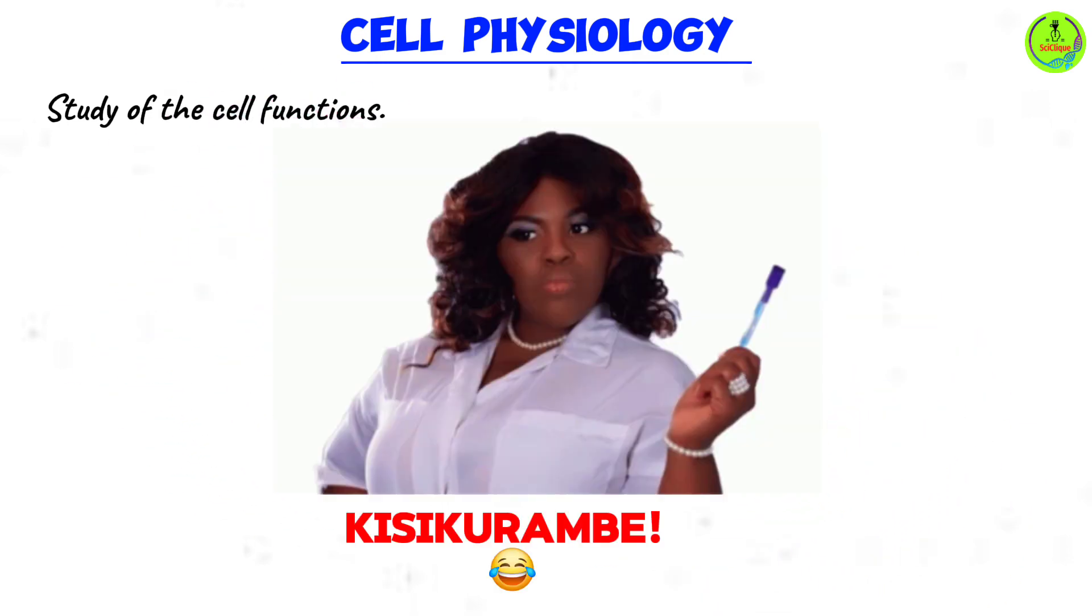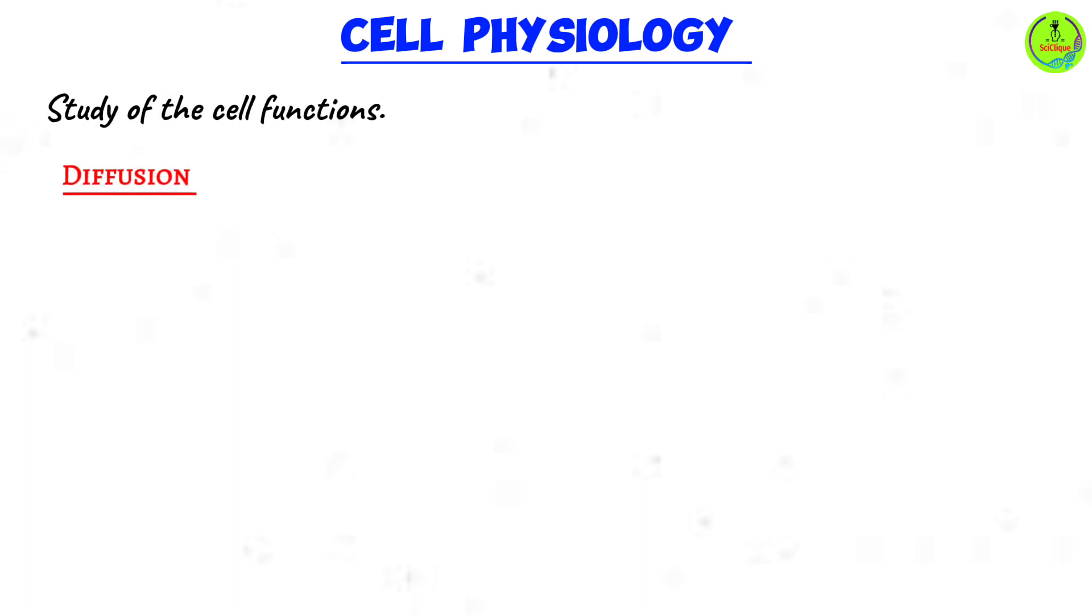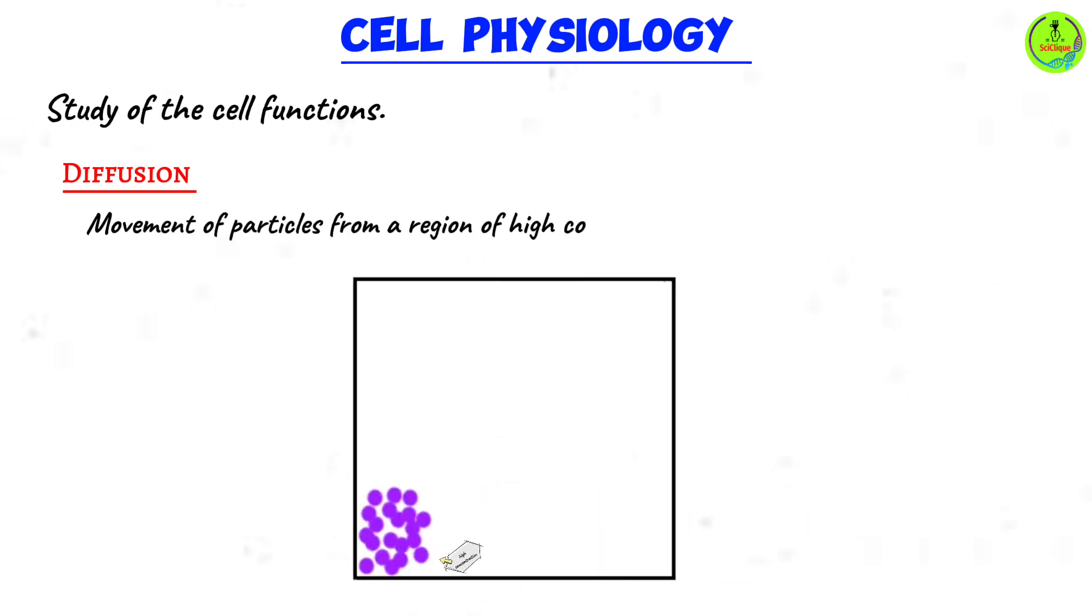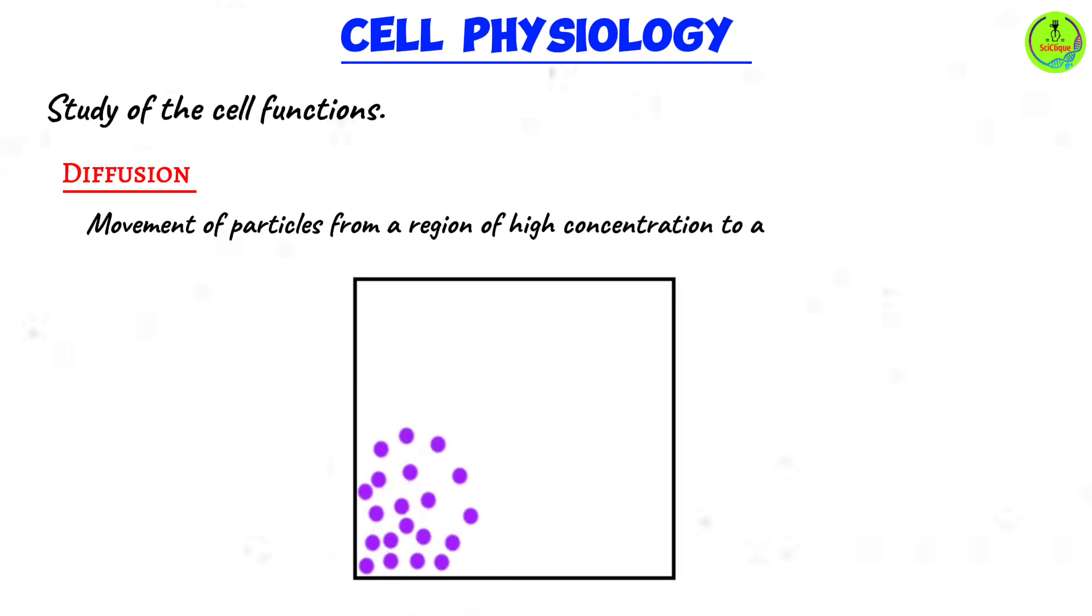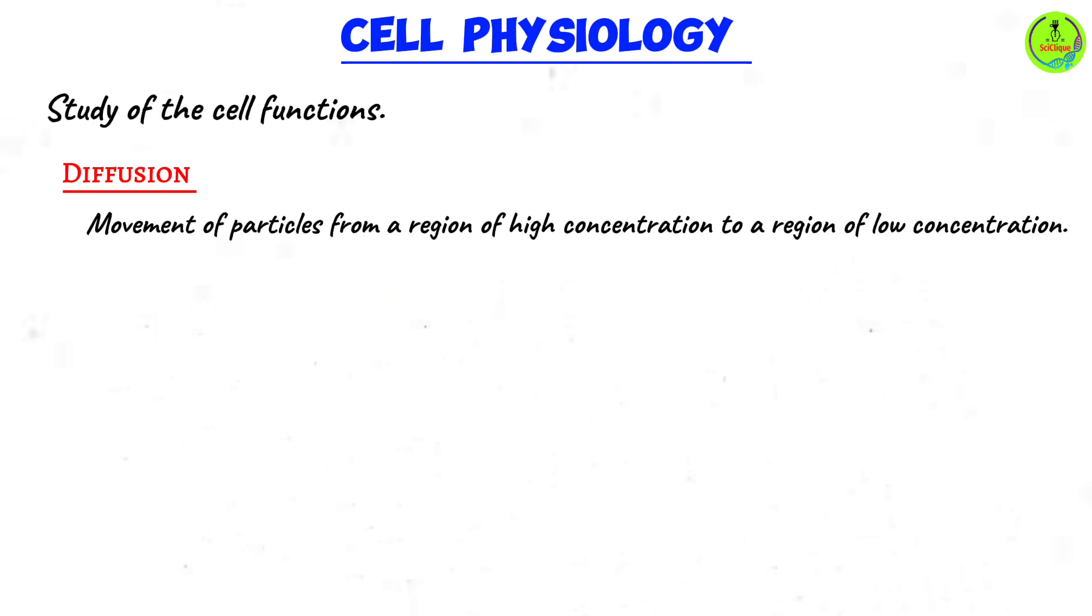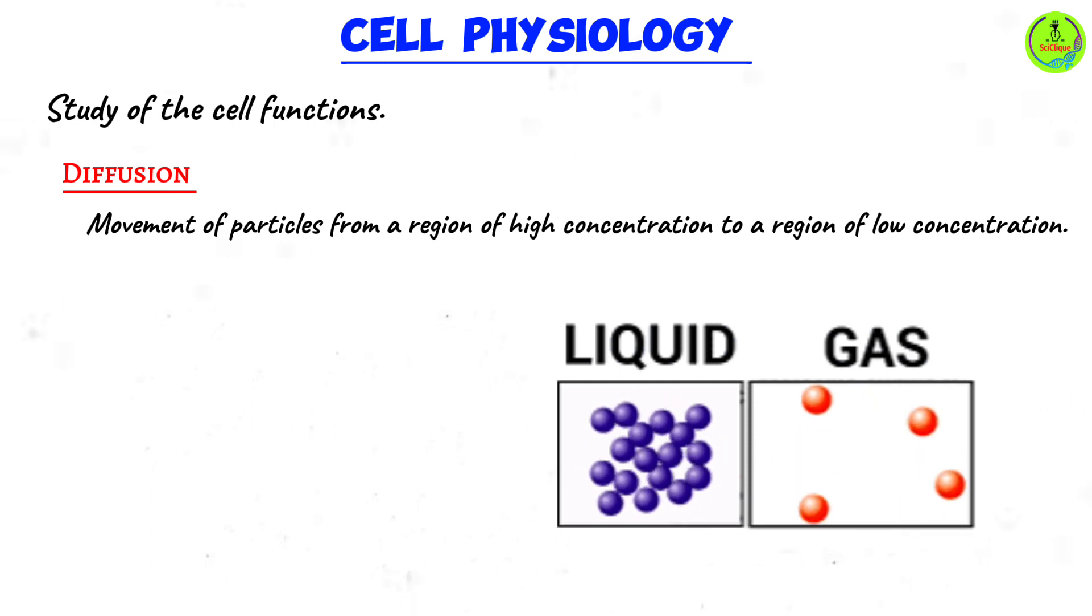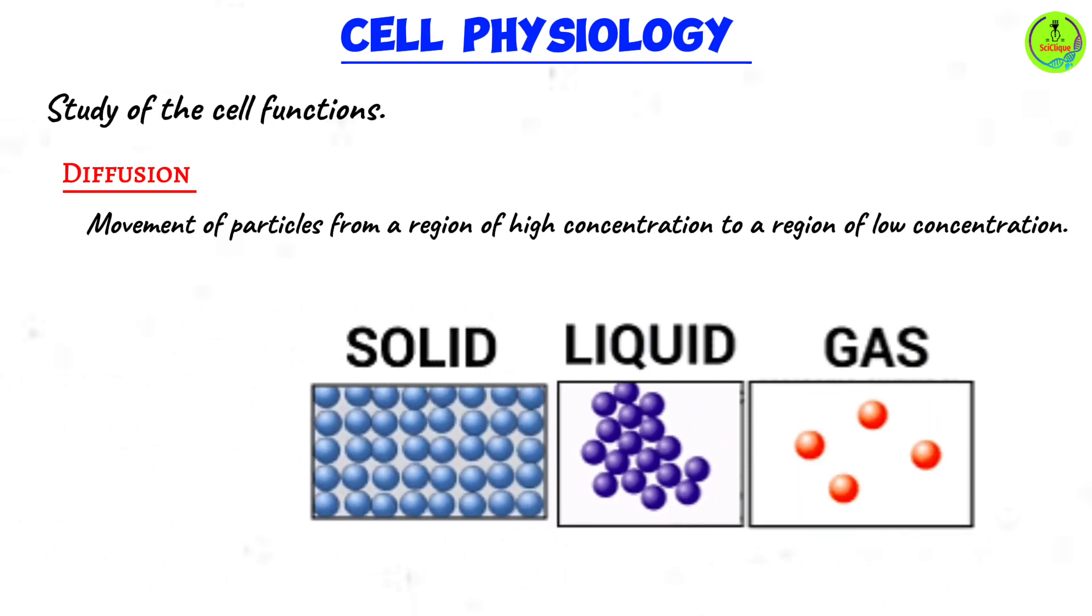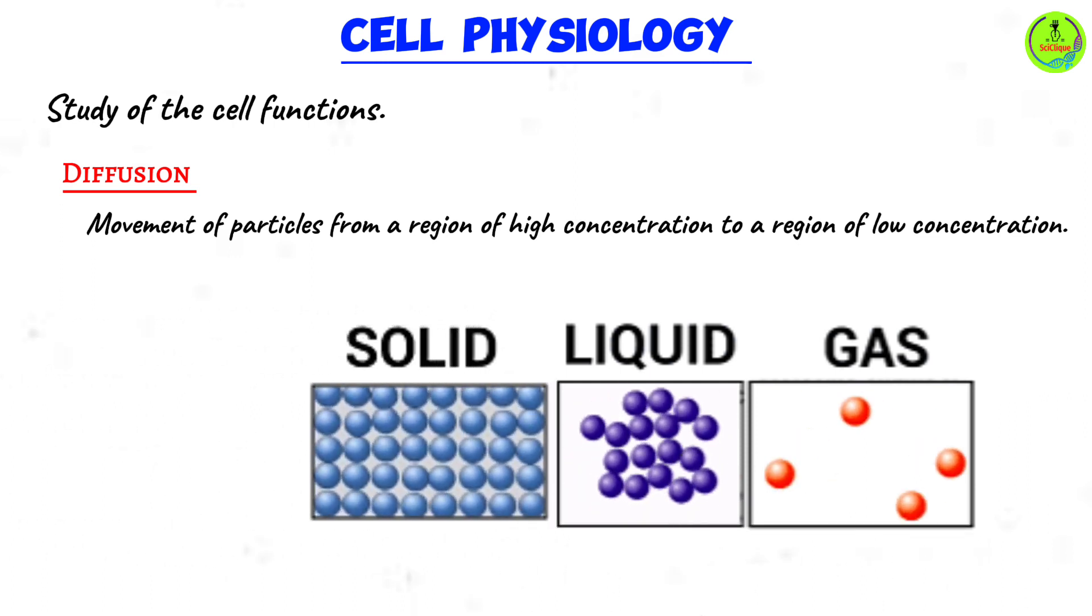Let us start with our first physiological process, and that is diffusion. How do we define diffusion? Diffusion is the movement of particles from a region of high concentration to a region of low concentration. What do we mean by particles? Particles are simply the small molecules that make up gases, liquids, and solids. When it comes to these three, only gases and liquids can diffuse from one point to another.